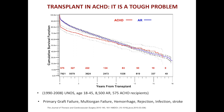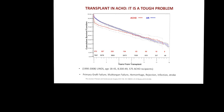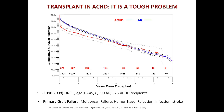I want to begin with this slide — focus on those two curves for just a moment and accept that this is a really tough problem. This is UNOS data from 1990 to 2008, not single-center studies. It's easy to see the slope that congenital heart disease patients embark on when they undergo transplant. These patients end up dying from primary graft failure, multi-organ failure, hemorrhage, rejection, infection, and stroke. The Fontan is the toughest of the tough, so the slope is even worse for them.